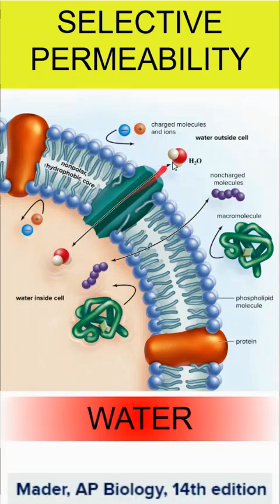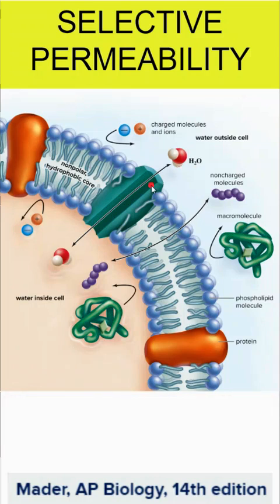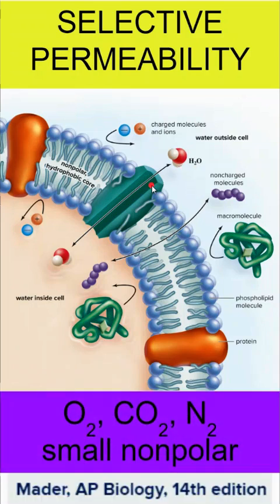Water is small, but it is polar. So some of it can get through, but typically to move in large amounts, we need aquaporin channels. The molecules that have free range to passively transport on their own have to be small and nonpolar, which include oxygen, carbon dioxide, and nitrogen.